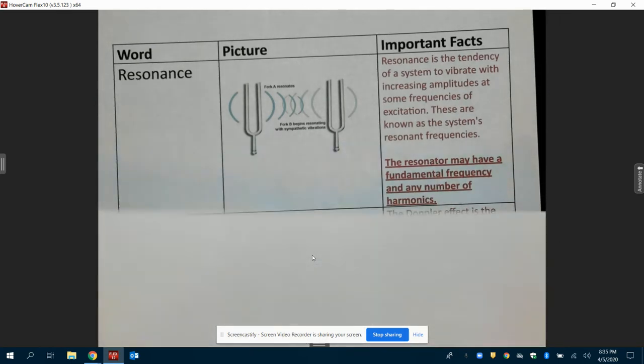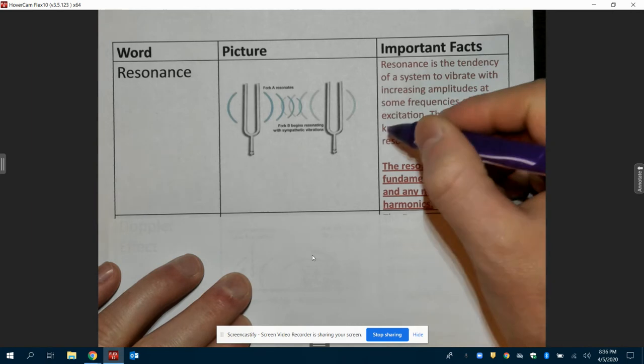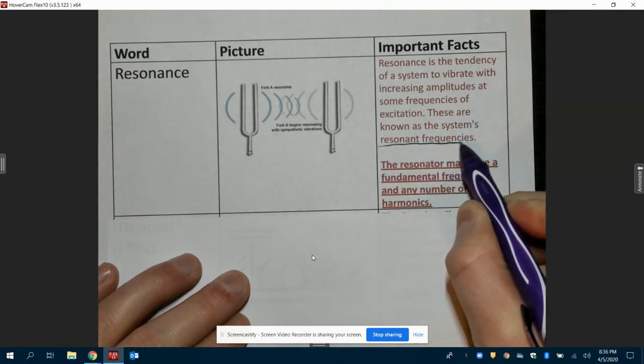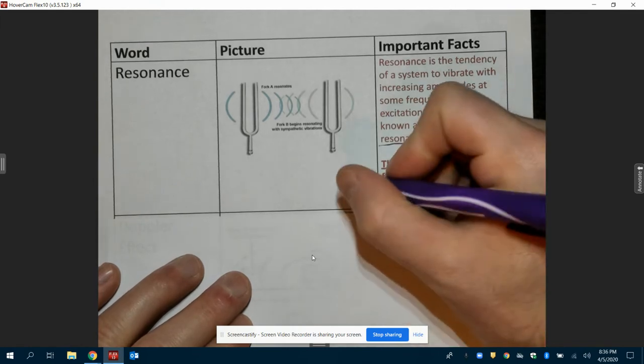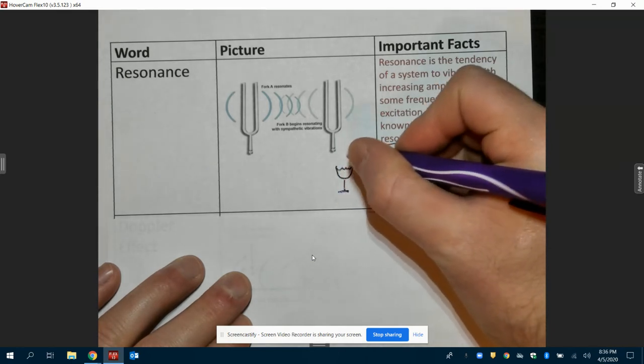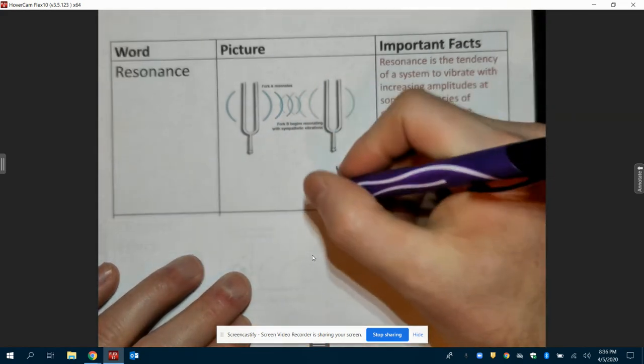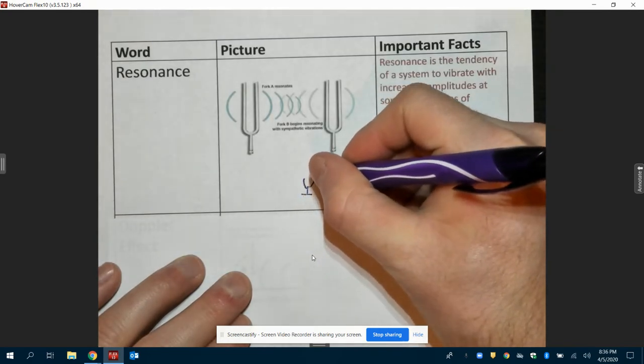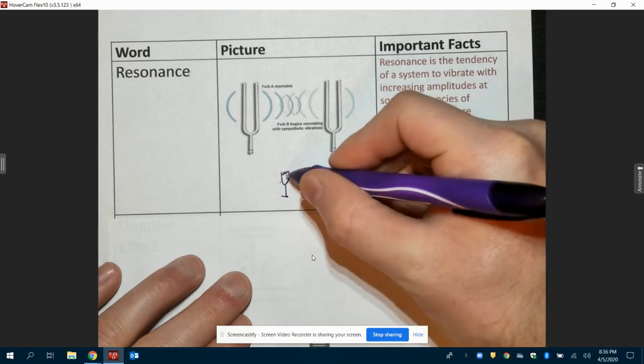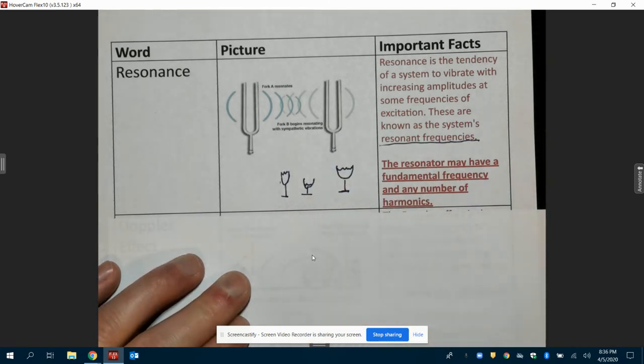So what resonance is is the tendency of a system to vibrate with increasing amplitudes at some frequencies of excitation. These are known as the system's resonant frequency. You can get the same thing if you took typically a wine glass. And if we fill it up to a certain amount of water, and then you rub your finger around the top, if it's a little wet, you get that sound, that specific sound. And what you see is if we do that with varying amounts of water, that changes the frequency or the tune, and we basically get an assortment of ranges just like if we had a bunch of different tuning forks.